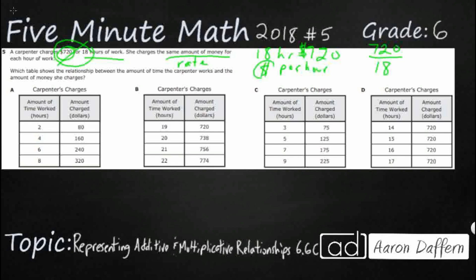So we have our dollars as our numerator. We have our time, in this case 18 hours, as our denominator. And so she charges $720 for 18 hours of work. And we can actually just do a little bit of long division here to figure out what her per hour rate is.